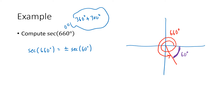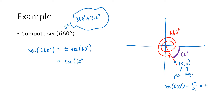We have two things to figure out: is it plus or minus, and what is the actual secant of 60 degrees? For the sign, we imagine picking a point A comma B on that terminal side. Since we're in quadrant four, A is positive and B is negative. Secant of 660 degrees is R divided by A — R is always positive, A is also positive — so this is a positive number. The secant of 660 is just the positive secant of 60. Now, secant is one over cosine, and cosine of 60 degrees is one half, so one divided by one half is two.